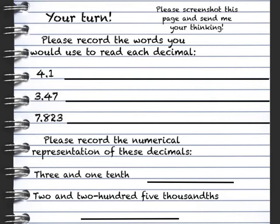Now it's your turn to try. Please screenshot this page and send me your thinking. For the first three, I want you to please record the words you would use to read each decimal. Then, please record the numerical representation of these decimals at the bottom. So, for these, you'll write the words you would use to read the decimal. And, on the last two, I want you to write the number that represents those two decimals in words. Alright, good luck. Feel free to refer back to any slide in this video if you need some extra reference, or to use our place value chart.